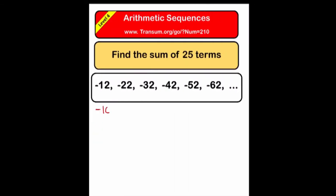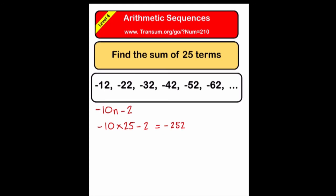The last example asks us to find the sum of the first 25 terms of this sequence. First find the formula for the sequence: it's minus 10n minus 2. Substituting 25 into that formula, the 25th term is negative 252. So the sum is the first term, minus 12, plus the last term, negative 252, multiplied by half the number of terms, 25 over 2. The answer is minus 3300.